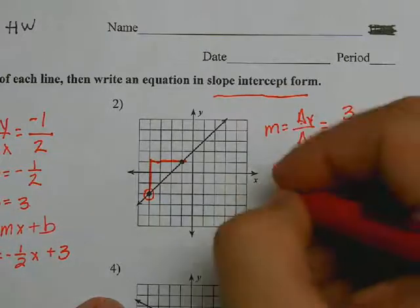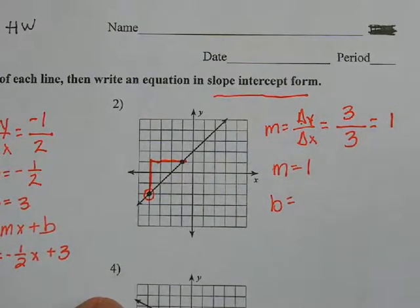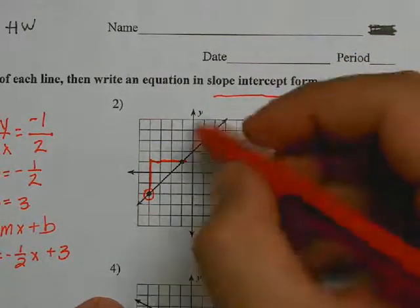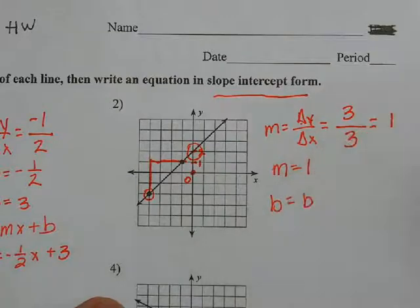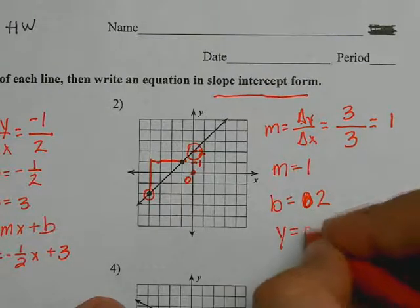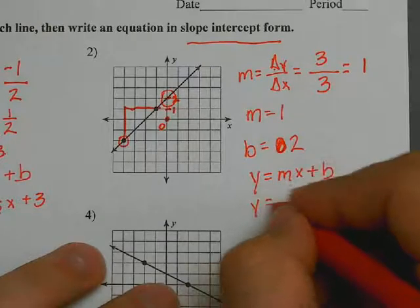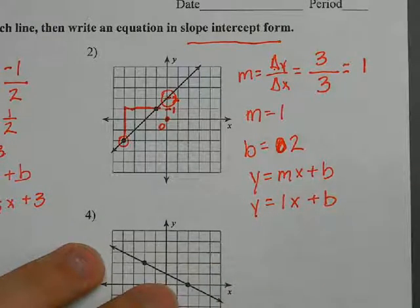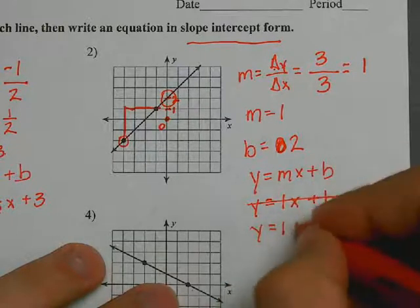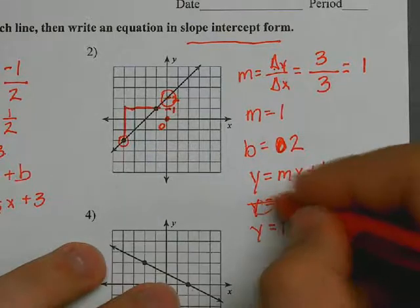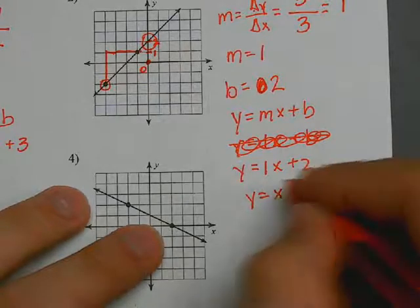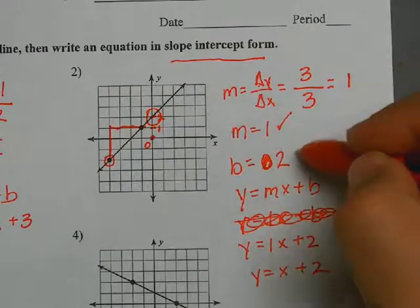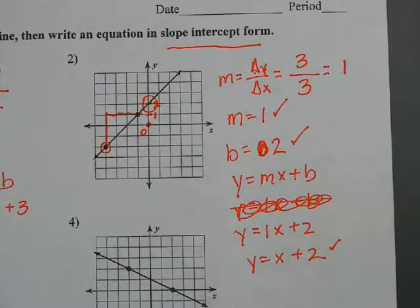Now I need to find b. Where does this line intersect the y-axis? Here's your y-axis — it intersects it right here. Here's your origin, so counting up: one, two. It intersects at two. So now I write the equation: y equals mx plus b, which would be y equals 1x plus 2. But I don't actually have to write the 1 there, so my final answer is y equals x plus 2. I have my m, my y-intercept b, and my equation.